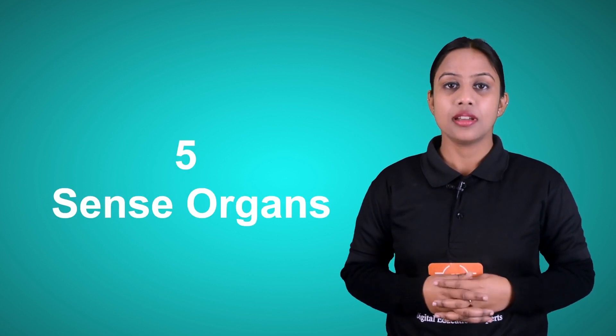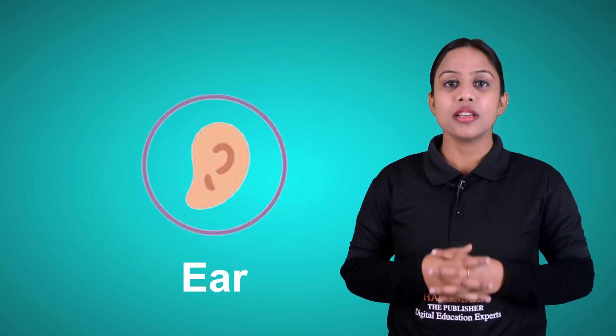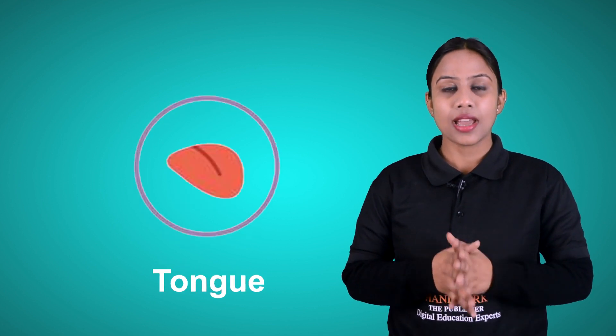So children, let's revise what we have learned today. Our body is made up of different parts and each part performs a different activity. We have five sense organs: eyes, ears, nose, tongue, and skin.